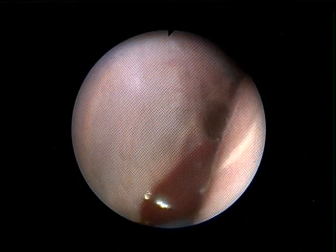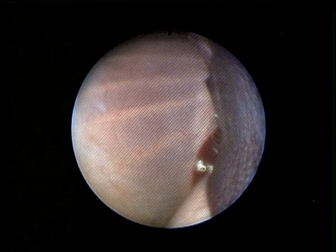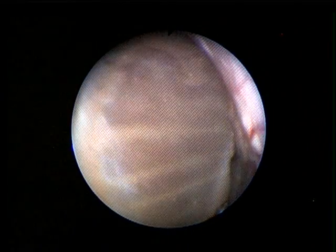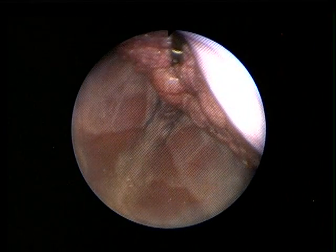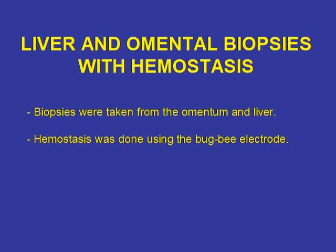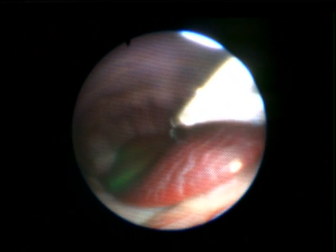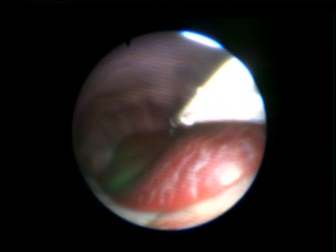All the quadrants of the abdomen were accessed including the pelvis, which could be done by retroflexion of the scope. This shows the pelvis with the retroflex view. Biopsies were taken from the different lobes of the liver and omentum, and hemostasis was done using the Bugbee electrode.